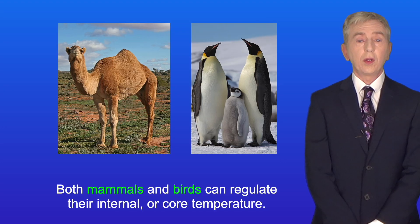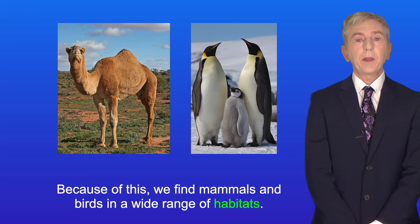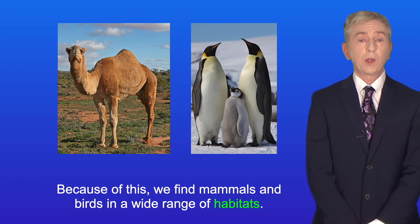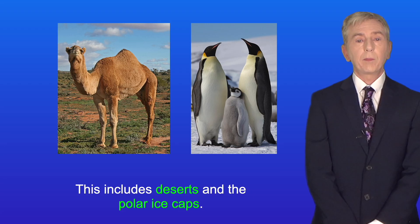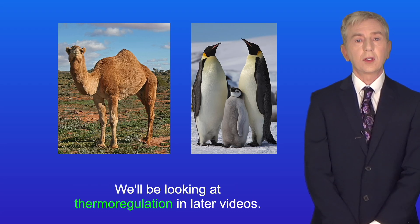Both mammals and birds can regulate their internal or core temperature. And because of this, we find mammals and birds in a wide range of habitats. This includes deserts and the polar ice caps. And we'll be looking at thermoregulation in later videos.